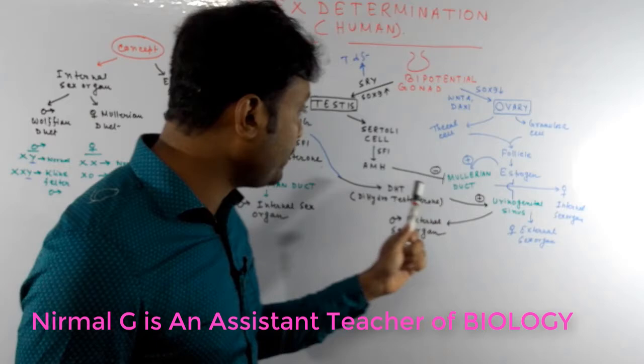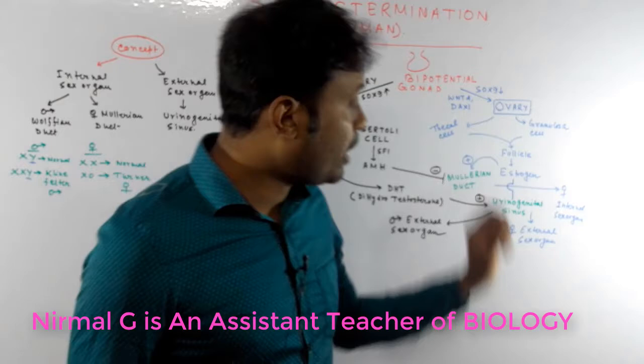The Sertoli cells are responsible for synthesizing a hormone called AMH, or anti-Müllerian hormone. This anti-Müllerian hormone acts upon the Müllerian duct and inhibits its further development, so female internal sex organs are not developed in the male embryo due to the presence of anti-Müllerian hormone.